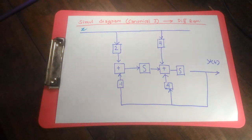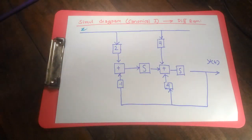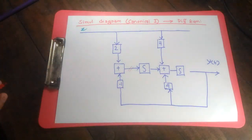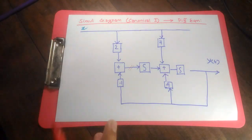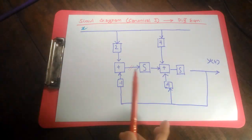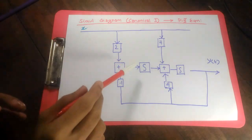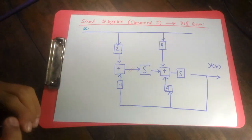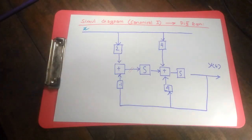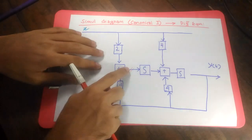Given this simulation diagram of canonical form 1, we want to find out the differential equation. There are a lot of feedbacks and signs. The thumb rule is: whatever happens, you want to come to the junction that is the leftmost of all the integrator signs. To the right of an integrator there are going to be integrals, and to the left there are going to be derivatives. Since you want the differential equation, you should come to the junction that has all derivatives and no integrals — that's why you go to the leftmost junction.